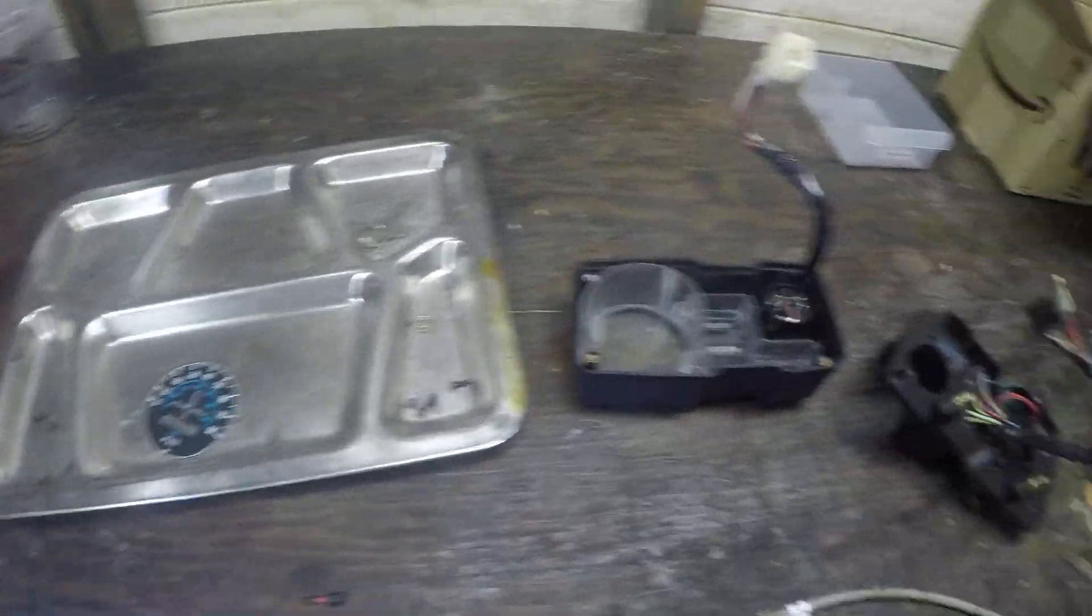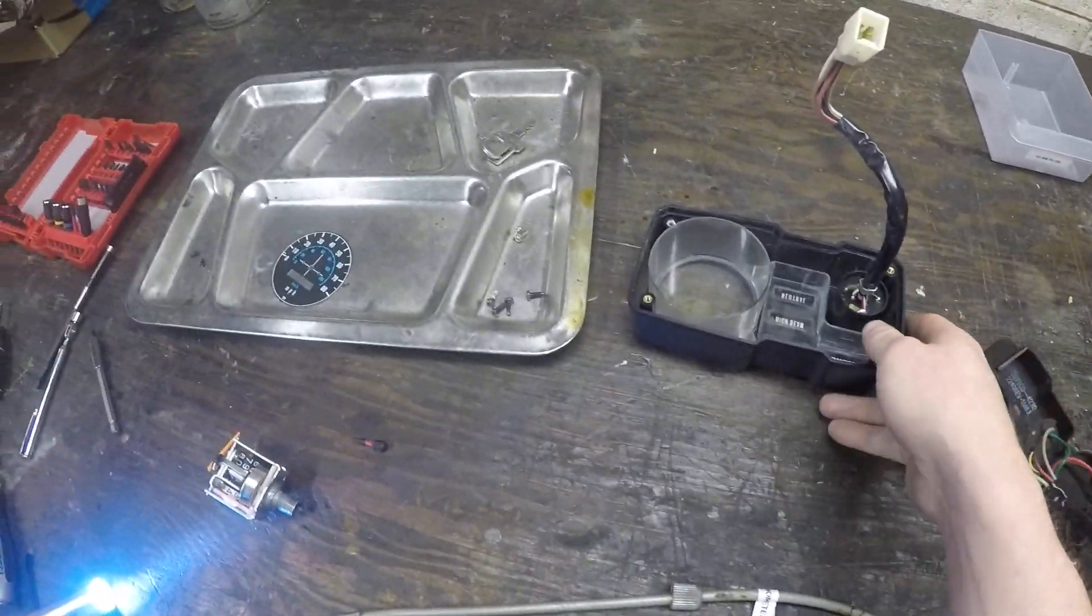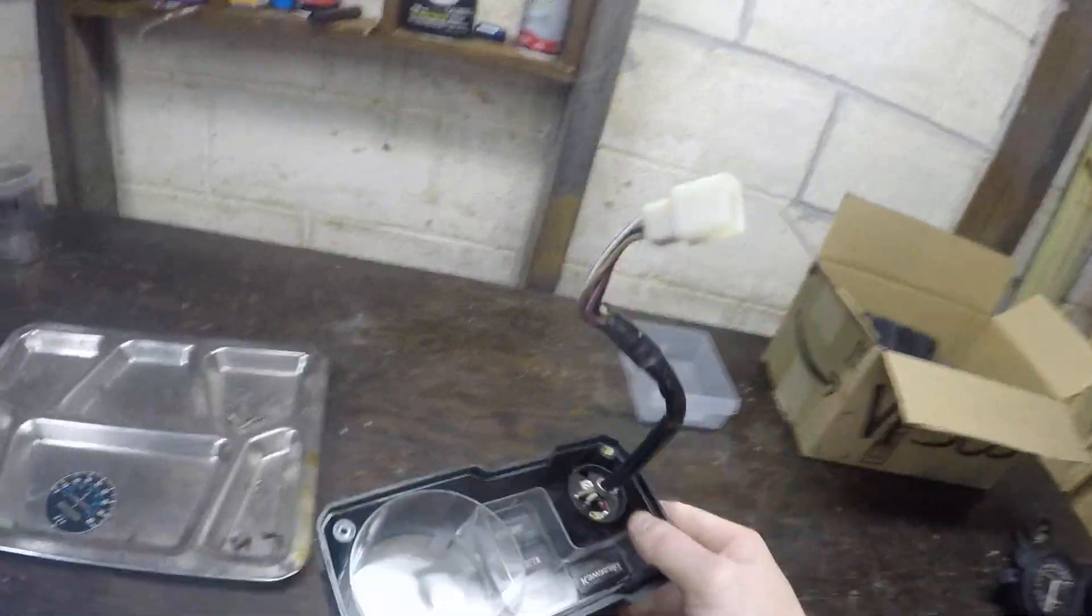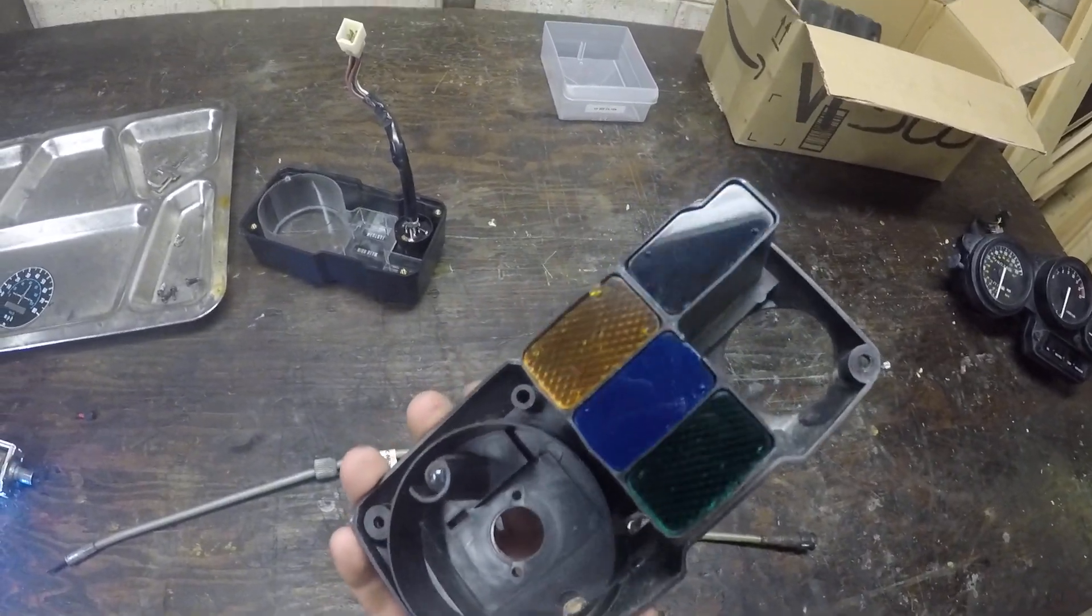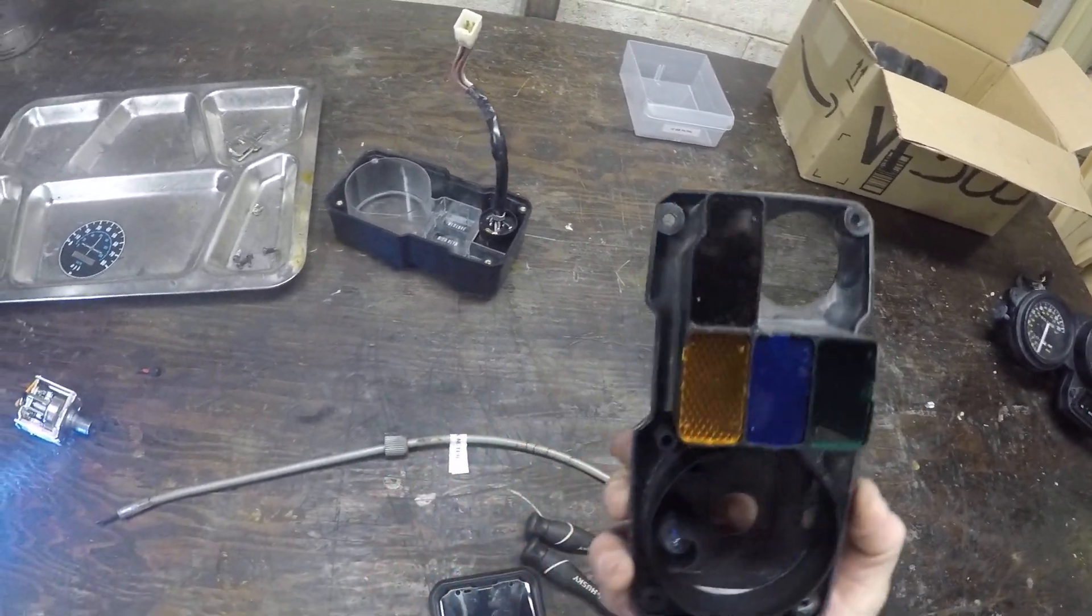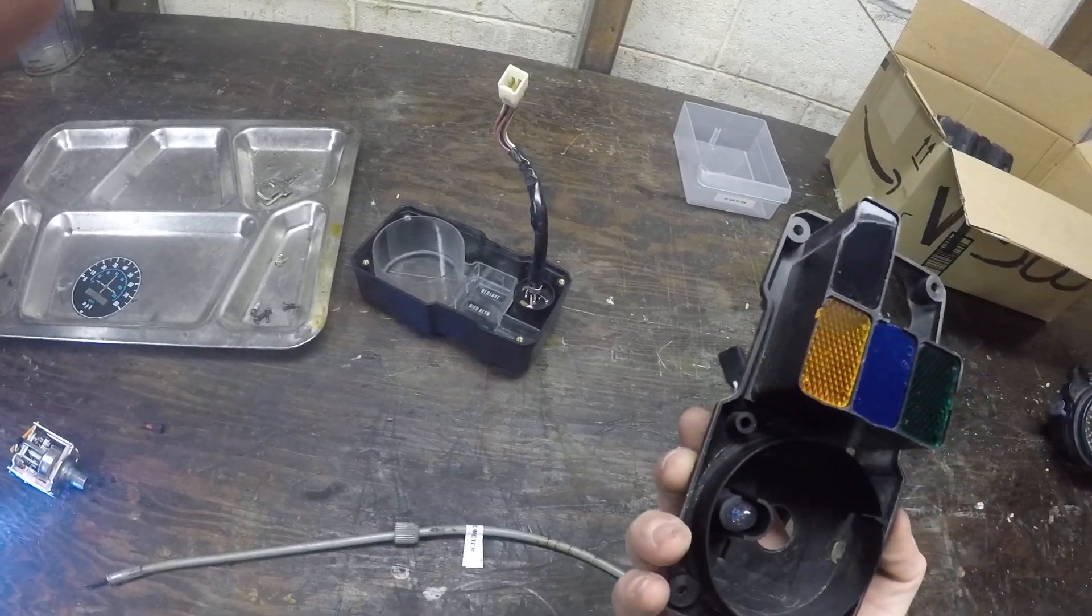These are the pieces. The gauge cluster itself is real simple, basically this is just the ignition on here, and on here there's just four lights for neutral high beams, oil lamp, and turn signals.